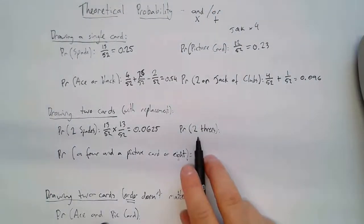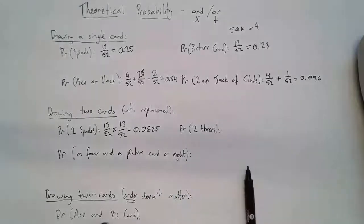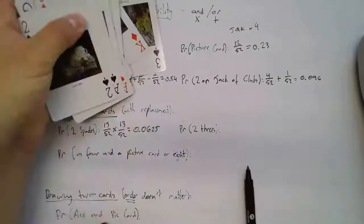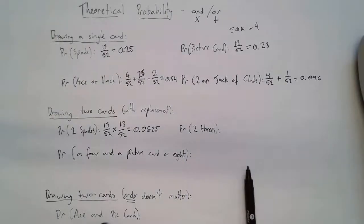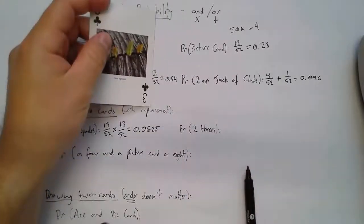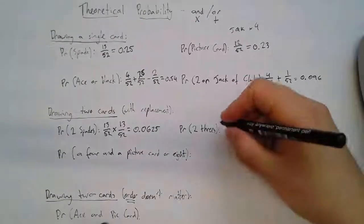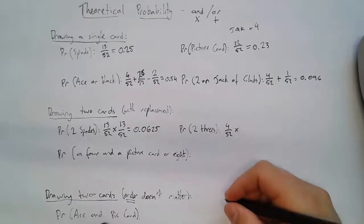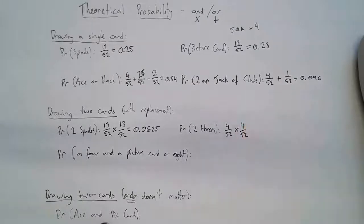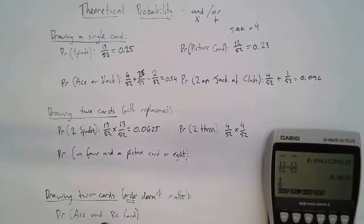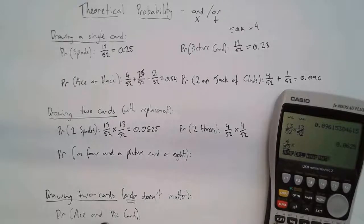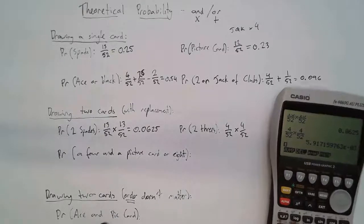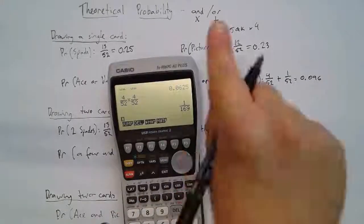Probability of two threes: I draw out a three, put it back, and then the next card I pull out is another three. How many threes are there? Four. So it's 4/52 times 4/52, which is 1 over 169.